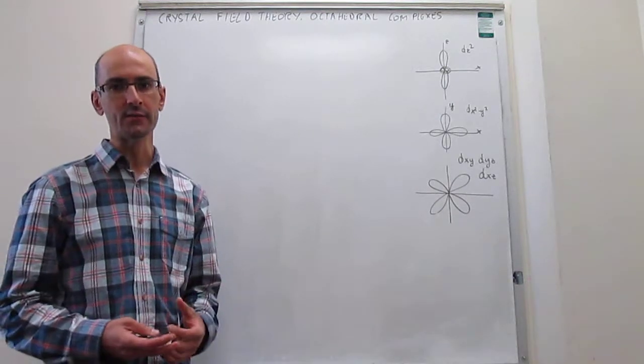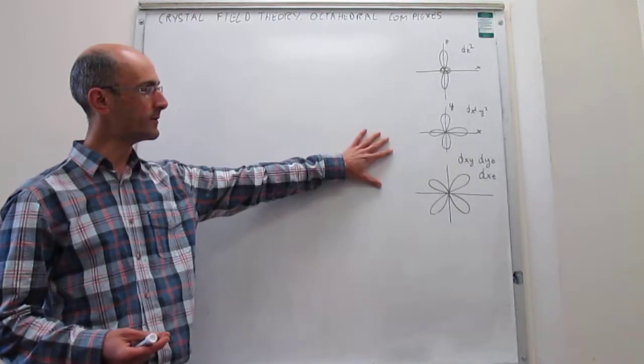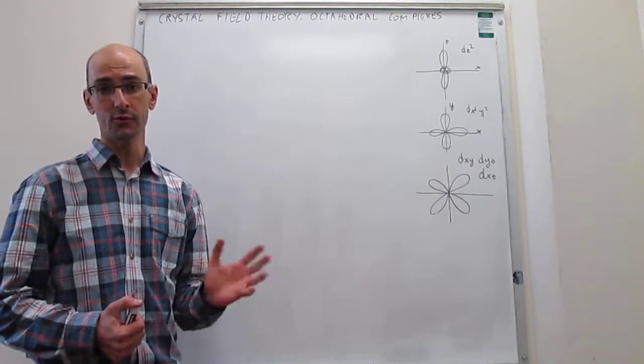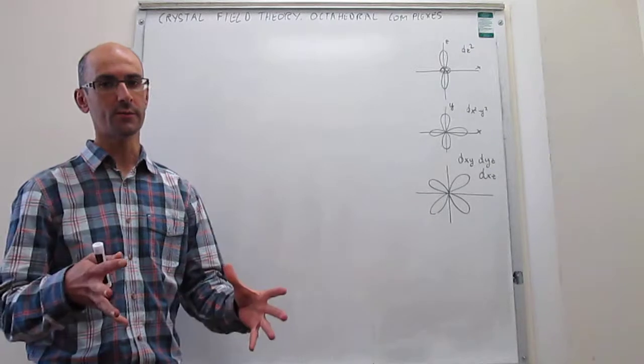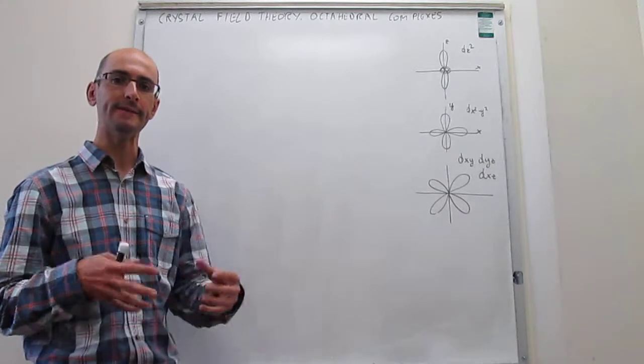Here's an overview of crystal field theory. These are the d-orbitals that are useful in transition metal chemistry. When these orbitals are put in the field of ligands, they experience varying degrees of electronic repulsion.